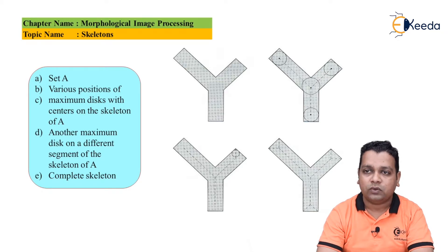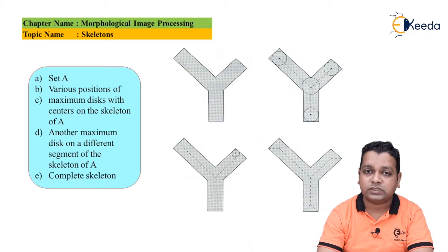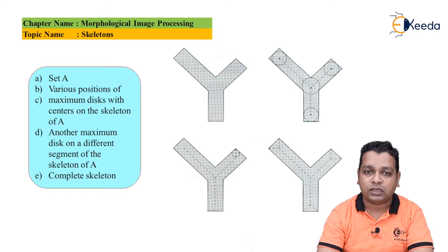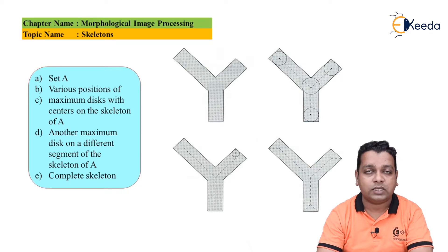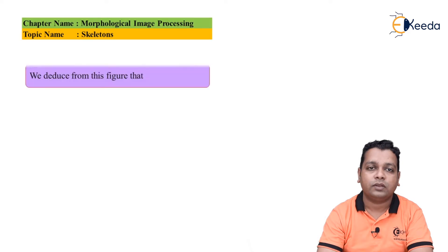In part C, the maximum disc with centers on the skeleton of A is represented. Another maximum disc on a different segment of the skeleton A is also shown. Finally, a complete skeleton is represented with a dashed line.